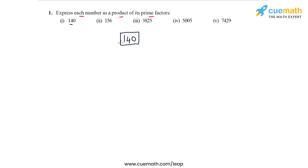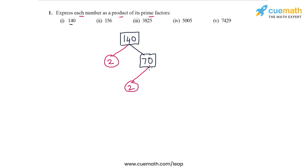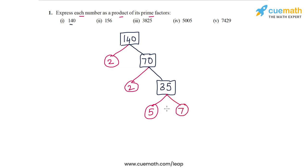We see that 140 is even, so let's take out a factor of 2. That leaves us with 70, and 70 is even again, so we take out a factor of 2 again, leaving us with 35. Now 35 is not even and not a multiple of 3, but it is a multiple of 5. Taking out 5, we are left with only 7, which is prime.